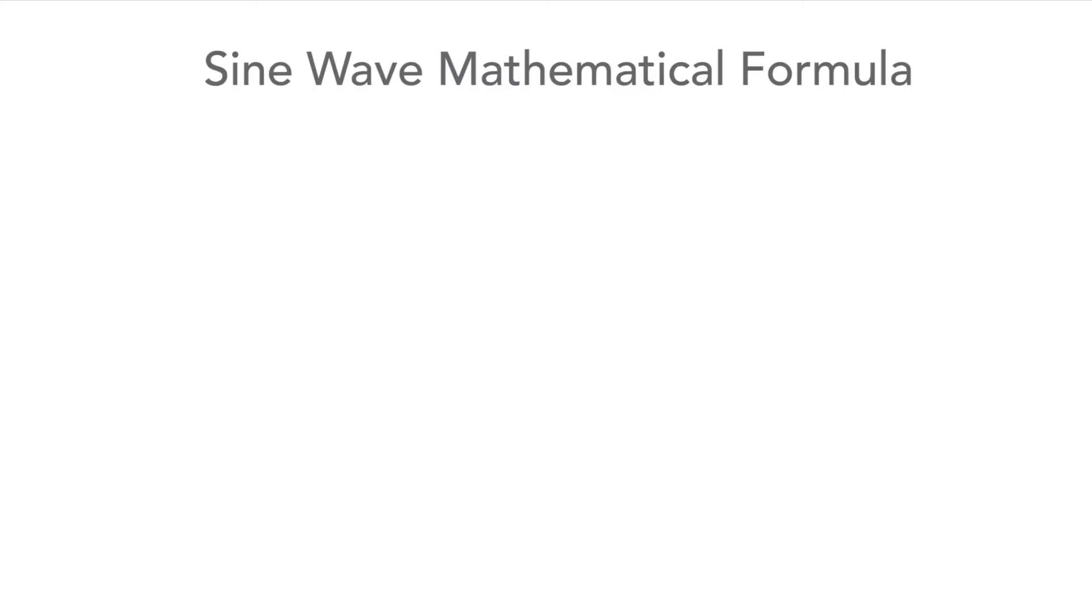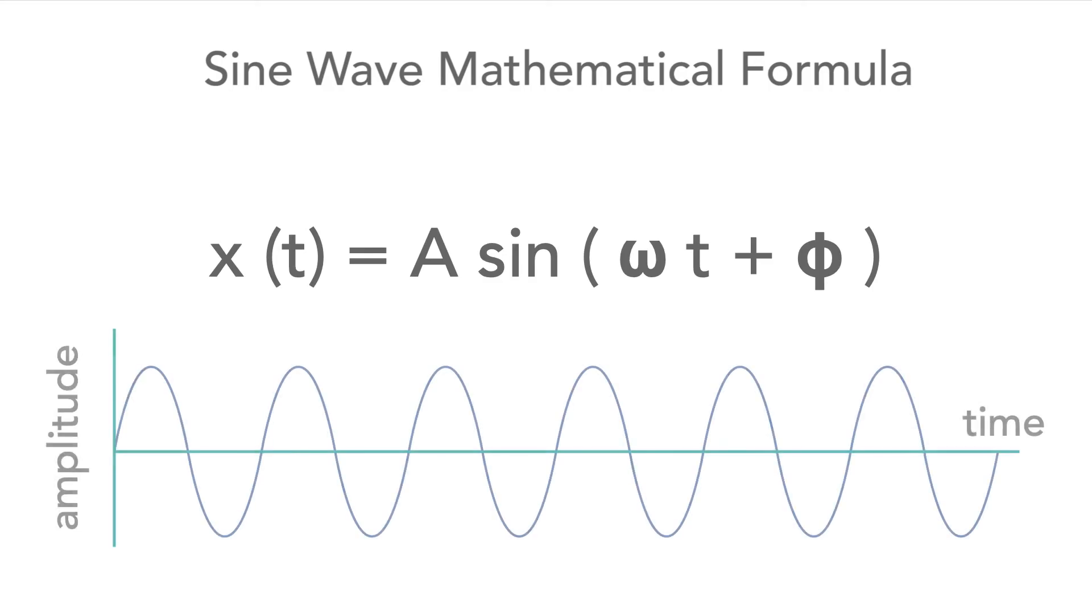It's possible to write a sine wave as a mathematical formula. The amplitude is the sine of what is called the angular frequency times the time. The value increases and decreases according to time and to the rate at which the waveform is advancing.